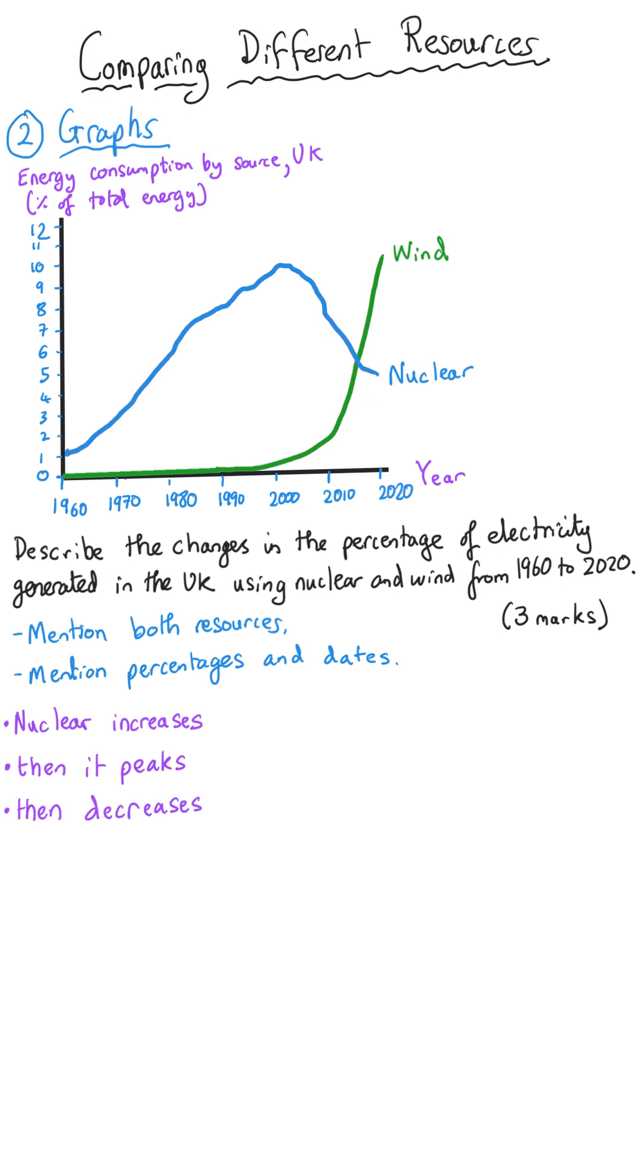The wind line is at zero at first for quite a long time and then it starts to gradually increase and then it increases at a faster rate. And so we've done a pretty good job here of describing the patterns that these lines are showing for the different resources.